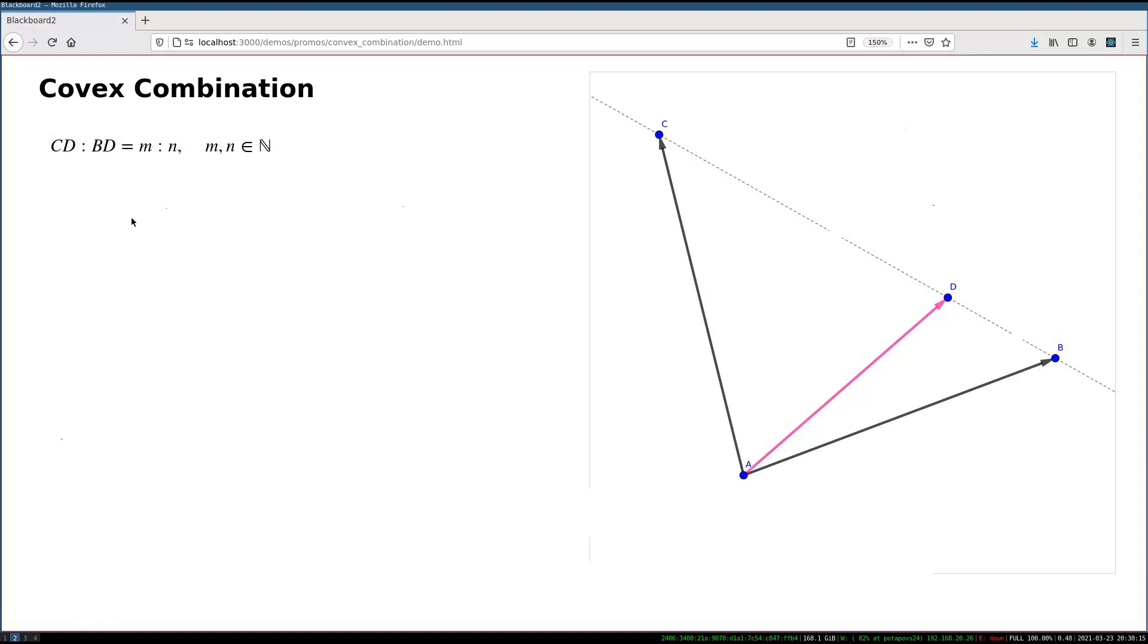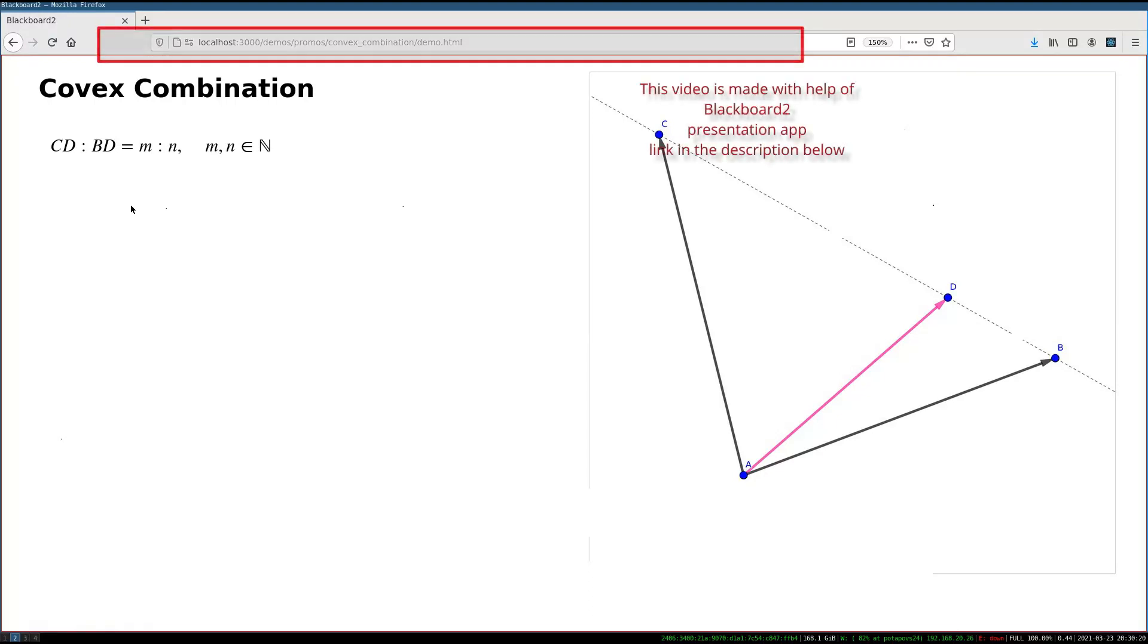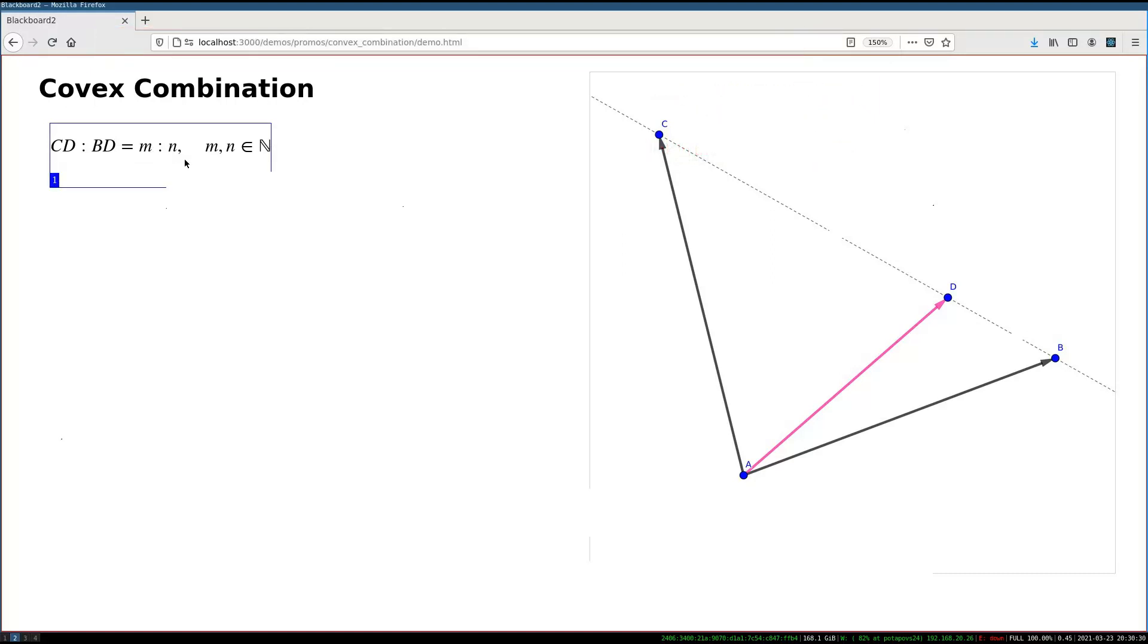If you face such a task, finding such a splitting point which cuts the given segment in certain proportions, M to N, convex combination is a concept which will help you to solve this task.